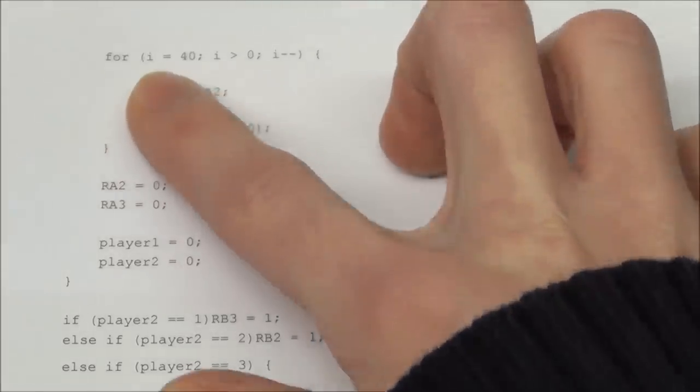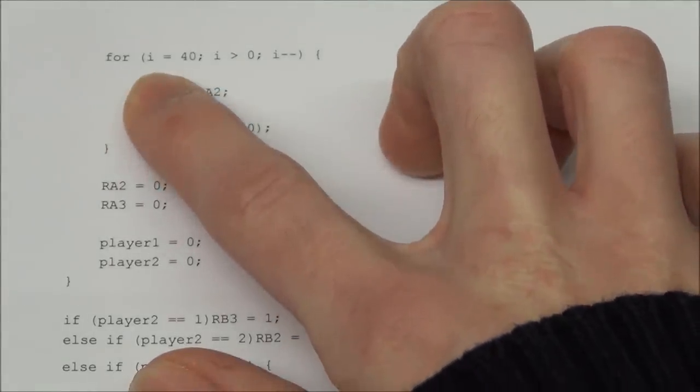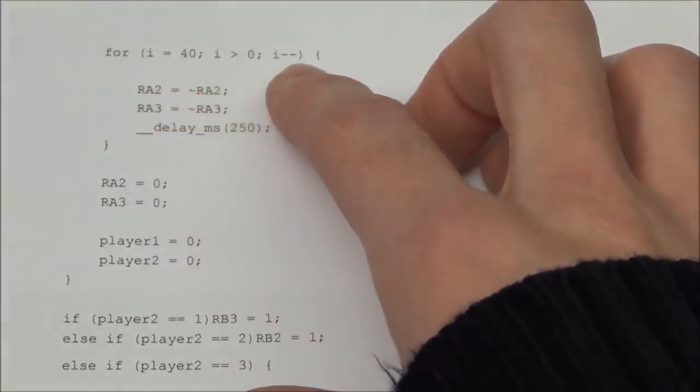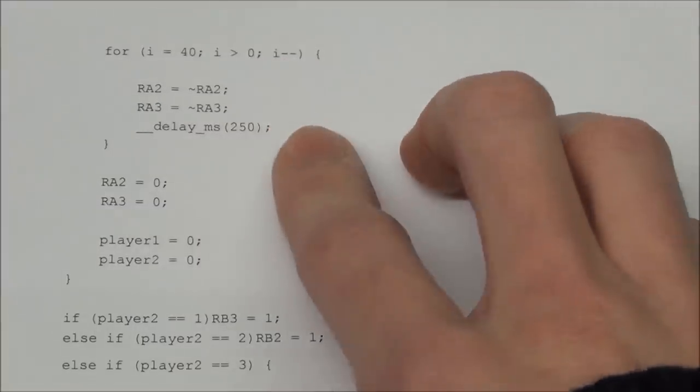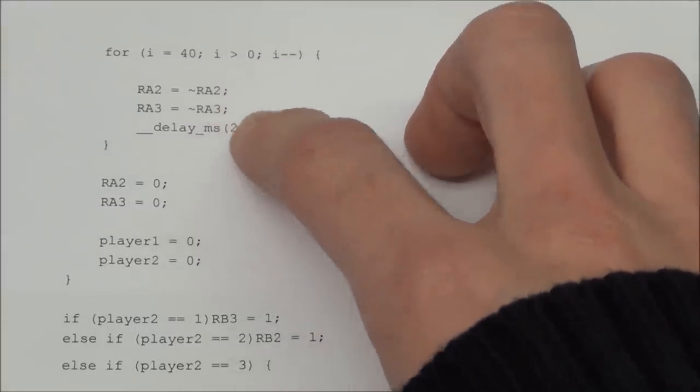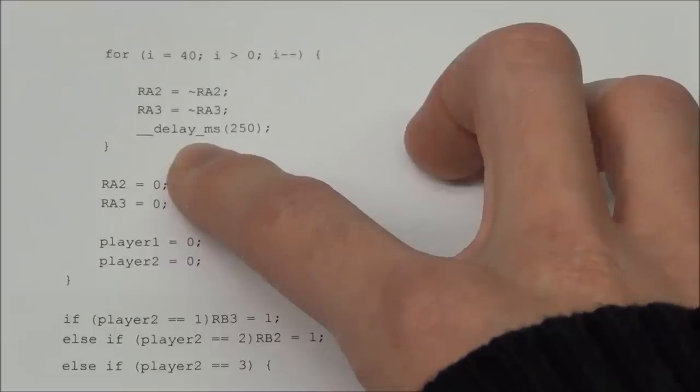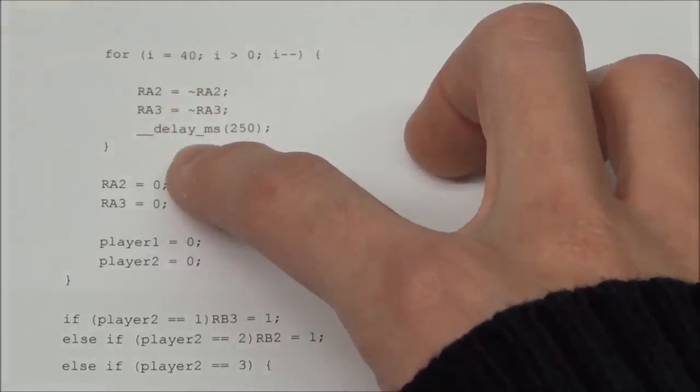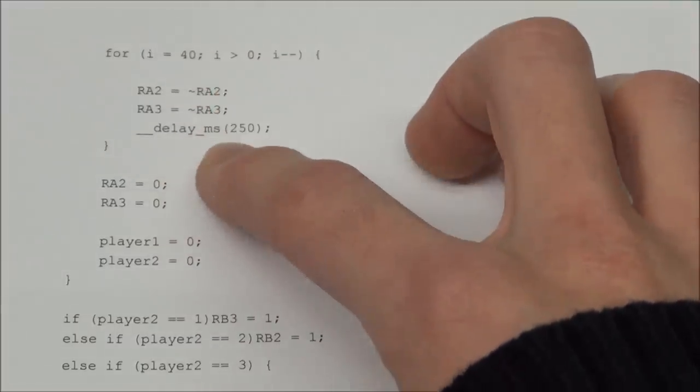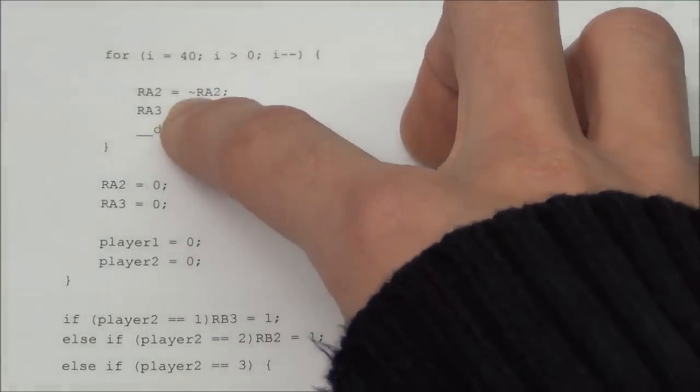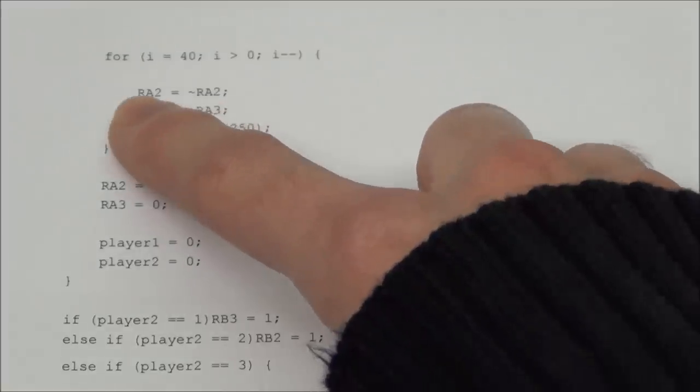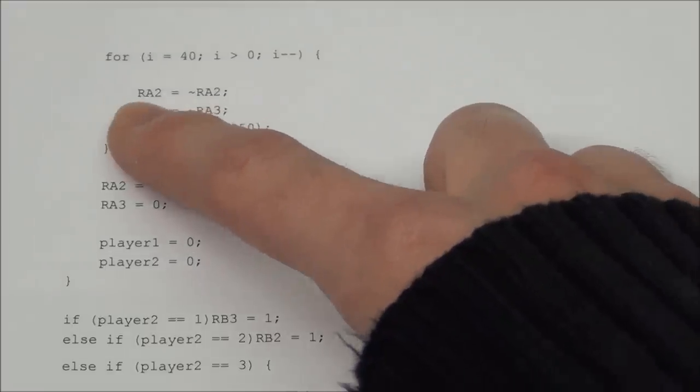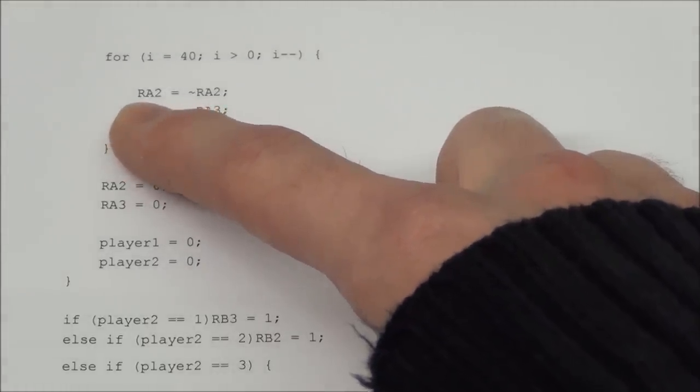And that is where we need the i variable that we set earlier. And this will set i to 40 and it will subtract one each time this loop is passed. So that means the LEDs will, as you can see here, blink 20 times because one time through the code and the LEDs are lit up and another time through the code and they will be turned off again. This symbol means opposite of, so if RA2 equals 1 then this will set it to 0 and the other way around if it's set to 0 this will set it to 1.